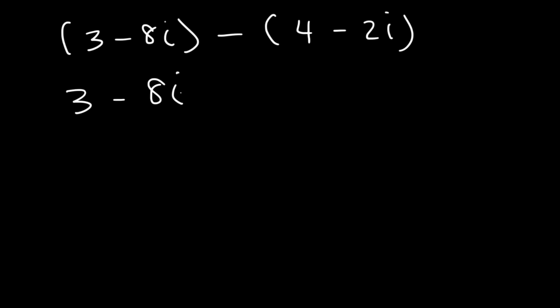So we don't need the first parentheses because there's nothing in front of it. Now we need to distribute the negative sign, and so positive 4 will now be negative 4. Negative 2i will change to positive 2i.